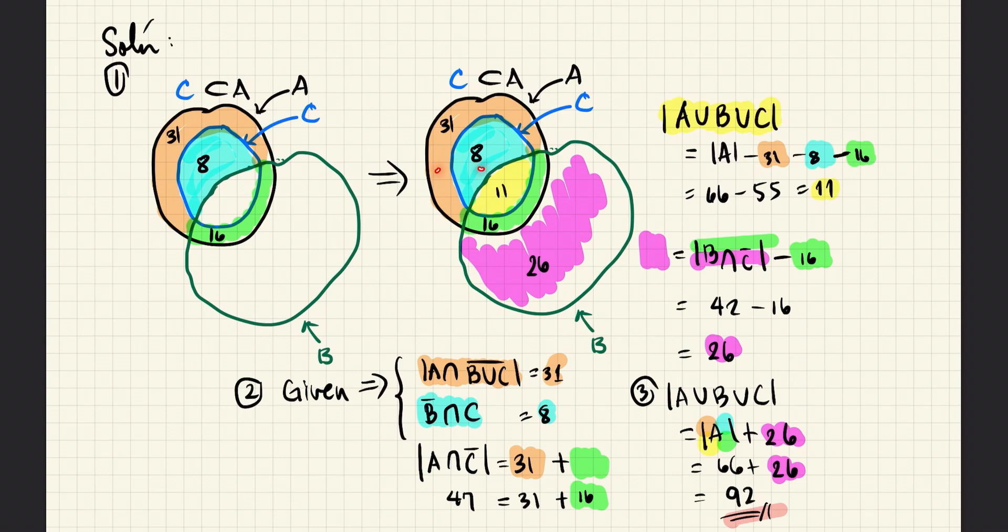And finally, for the union of the three sets, we just need to add all the sections. Conveniently, we already know A. And so, we just need to add 26 to A. A is 66. The pink region is 26. And that gives us 92 for the entire union.